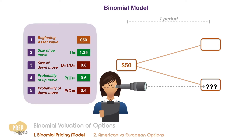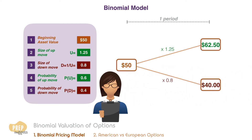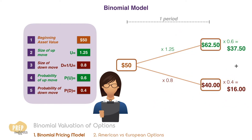By multiplying the current price with the up move factor we get the expected price in the event of an up move to be $62.50. In the event of a down move the expected price is $40. By multiplying each of these values with their respective probabilities and summing them up we get an expected price of $53.50 after one year.